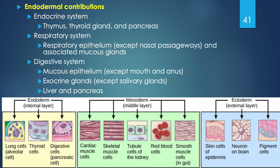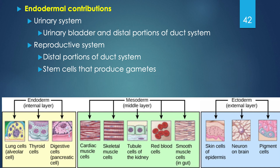The endodermal layer contributes to the endocrine system (thymus, thyroid gland, and pancreas), the respiratory system (respiratory epithelium excluding the nasal passageways, and associated mucous glands), and the digestive system (mucous epithelium excluding mouth and anus, extran glands excluding salivary glands, and also the liver and pancreas). The endodermal layer also contributes to the urinary system (urinary bladder and most distal duct portions) and the reproductive system (distal duct portions and stem cells producing gametes — both ova and sperm).